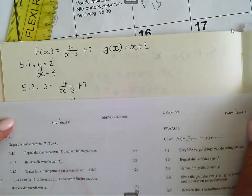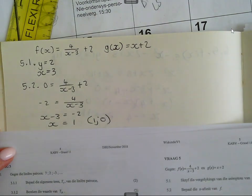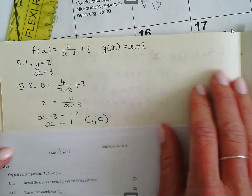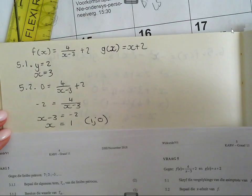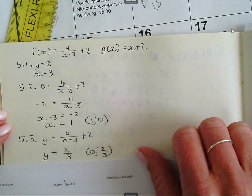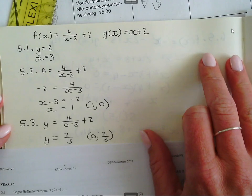Dan die x afsnit, maak y 0, dan krijg jy 1. Kom in die gewoonte, skryf die koordinaat 1 en 0. Dan die y afsnit, maak vir x 0, is 2 op 3, skryf ons die koordinaat 0 en 2 op 3.